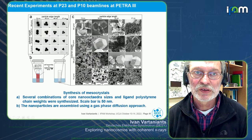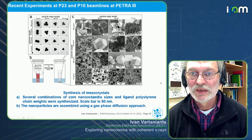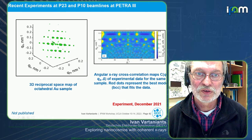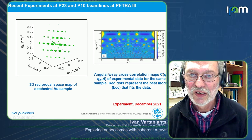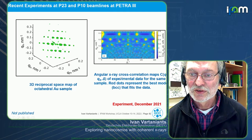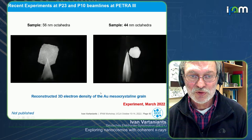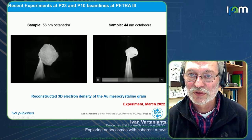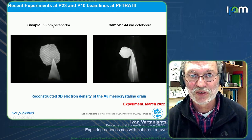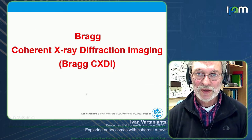We measured at P23 and obtained diffraction patterns that can be analyzed via cross-correlation analysis to get the structure. From the structure we found it's a BCC lattice. We also managed to reconstruct the particles — one obtained from 55.6-nanometer octahedra and another from 44-nanometer particles, and you can see how nicely they look.